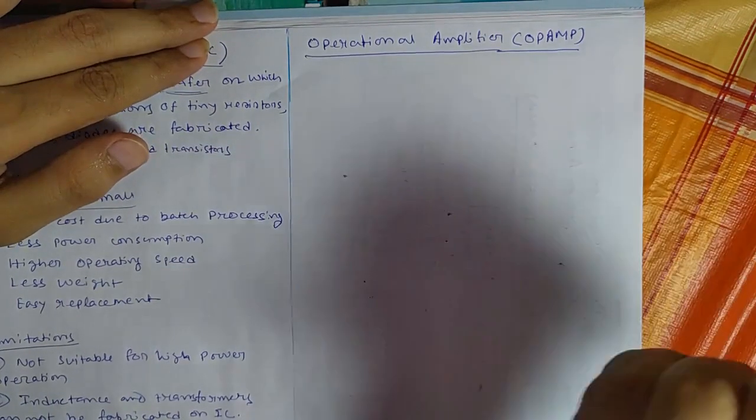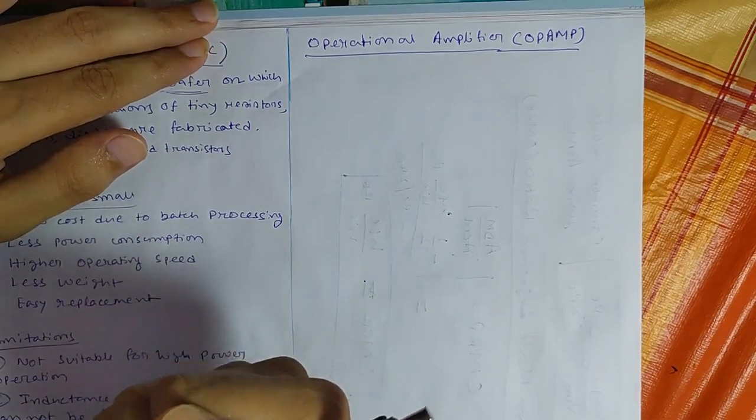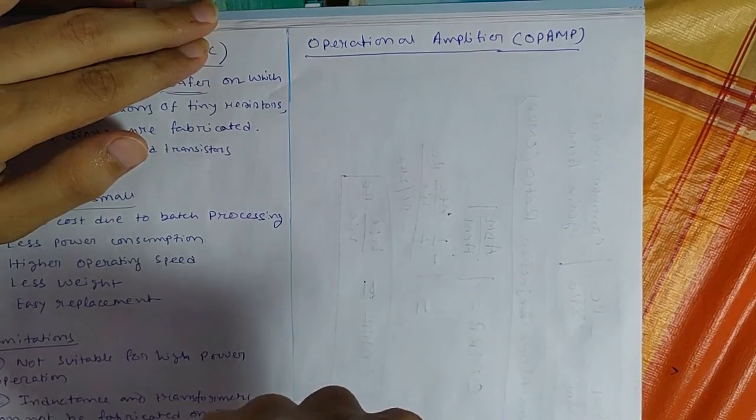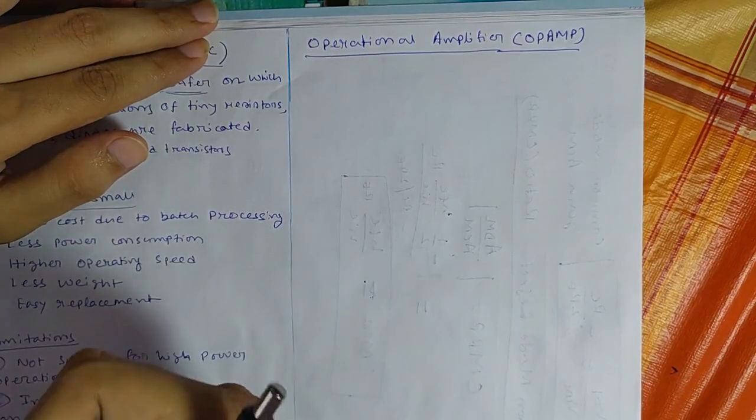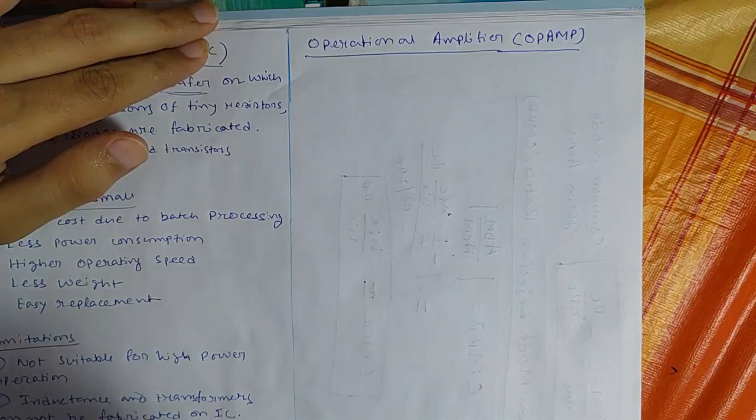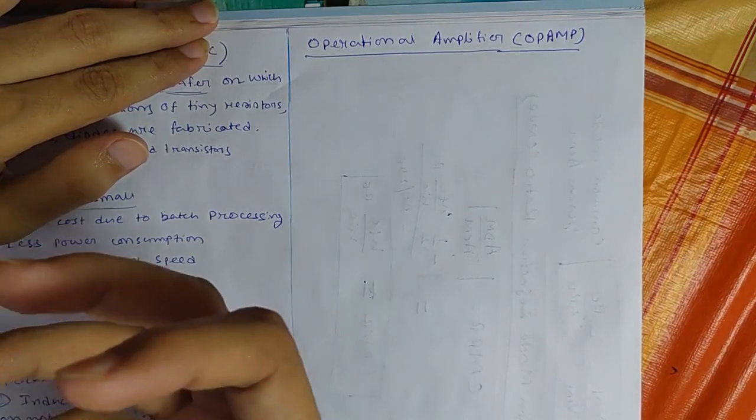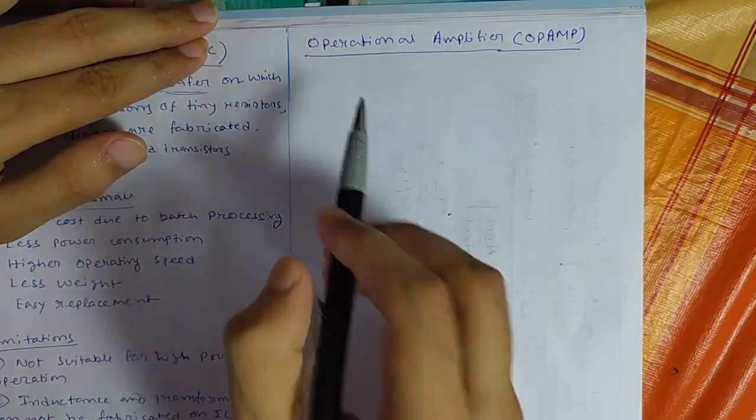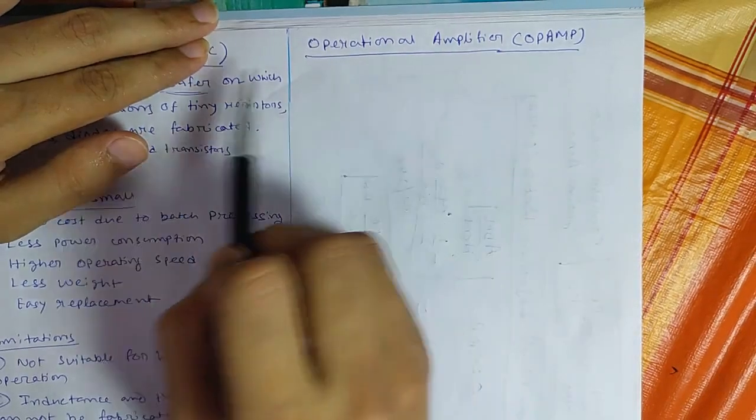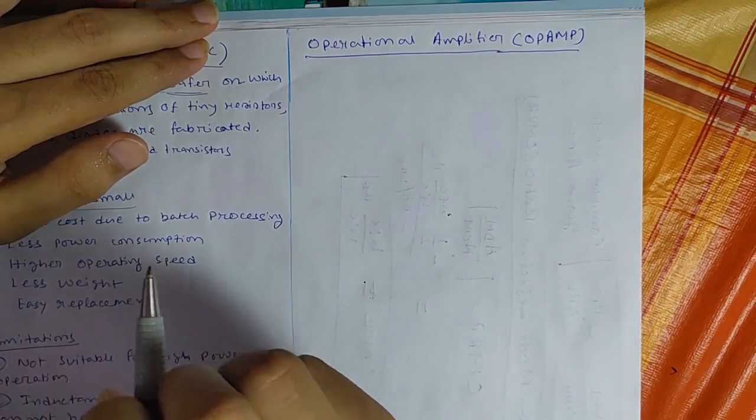In earlier days when we don't have any digital computers we use analog signal processing and for analog signal processing we required various kind of arithmetic operations. So using operational amplifier we can perform different kind of arithmetic and logical operation.